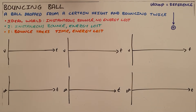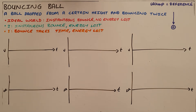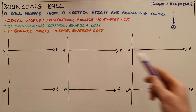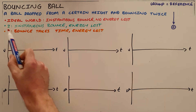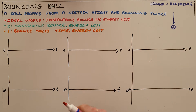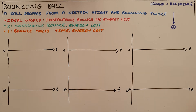One of the more common places where we use projectile motion is in the bouncing ball problem, where essentially we have a ball that is dropped from a certain height, allowed to bounce twice, and then caught again when it bounces to its maximum height. There are three scenarios in which this can happen. The first one is in an ideal world, meaning the bounce is instantaneous with no contact time with the ground and no energy is lost, so the ball would continue bouncing to its original height forever.